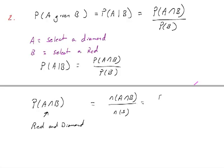So there are 13 cards that are both red and a diamond at the same time, and 52 cards in my sample space. So that probability of A and B is 13 out of 52.